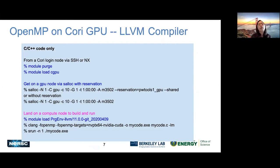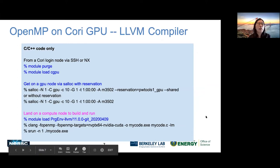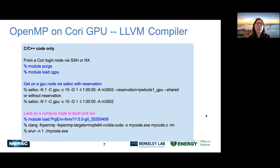The next few slides cover available compilers for OpenMP and OpenACC on GPU, and OpenMP only on CPU. For OpenMP on Cori GPU, the LLVM compiler is for C and C++ code only.